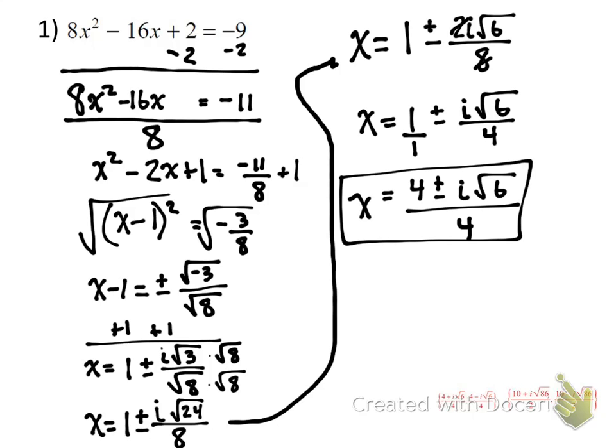There's two answers here: x is equal to 4 plus i rad 6 over 4 and 4 minus i rad 6 over 4. The reason why it's in this form, this is the form that your answer should be in. They should have a common denominator. Why is that? Because this looks like the quadratic formula. Remember, x is equal to negative b plus or minus the square root of b squared minus 4ac all over 2a. You see that?